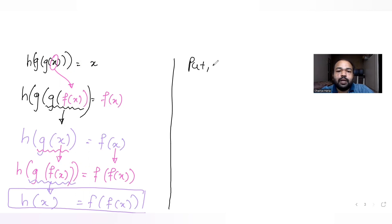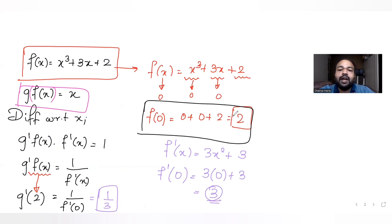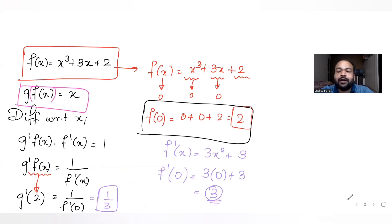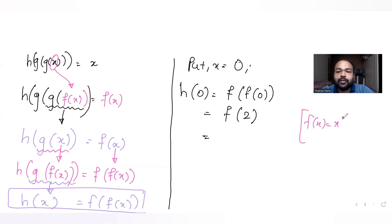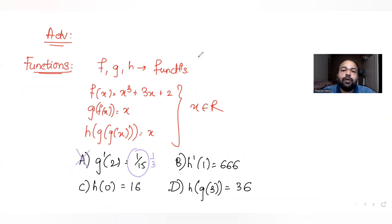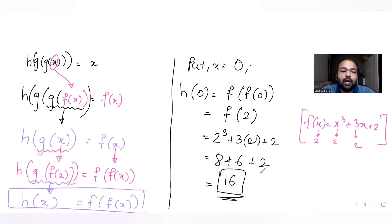Let's find h(0). Putting x = 0 in h(x) = f(f(x)): h(0) = f(f(0)). We already know f(0) = 2, so this becomes f(2). Since f(x) = x³ + 3x + 2, f(2) = 8 + 6 + 2 = 16. So h(0) = 16, which matches option C — a correct answer.